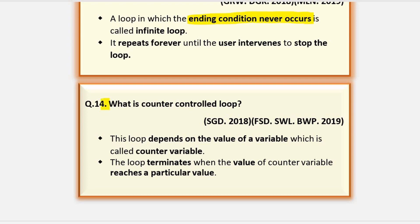What is a counter-controlled loop? A loop which depends on the value of a variable is called a counter-controlled loop. For loop is an example of a counter-controlled loop, because this loop terminates when the value of the counter variable reaches a particular value — for example, as we saw earlier: n is less than or equal to 5.